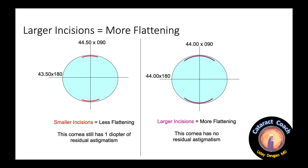On the left, a smaller incision has less flattening — the patient still has residual astigmatism of a diopter. For the picture on the right, with the longer arc lengths, there's more flattening and now the patient has a cornea with no residual astigmatism. The maximum effect of an LRI is probably about two diopters worth of astigmatism treatment.